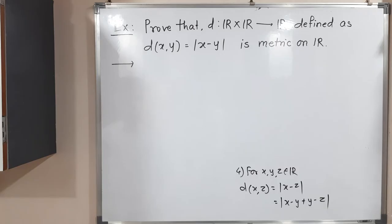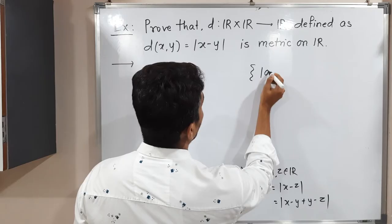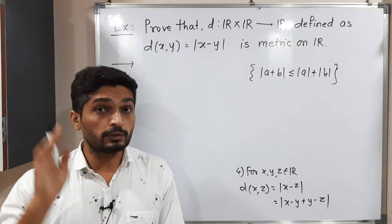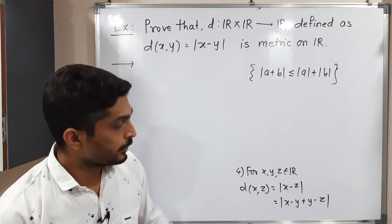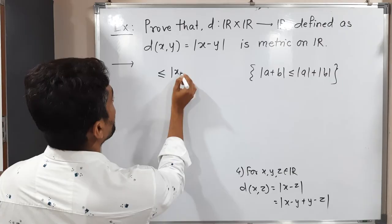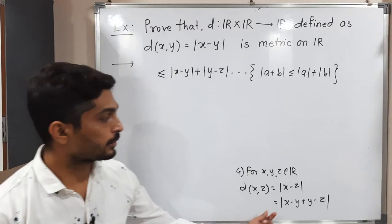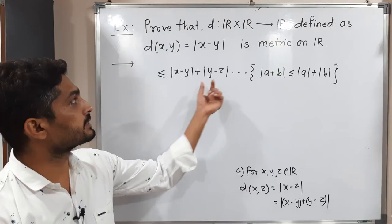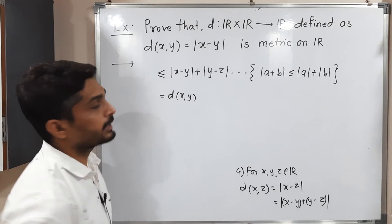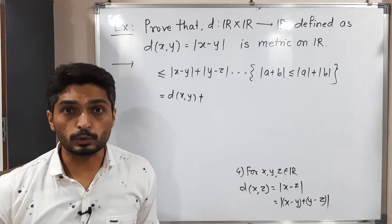We use the property |a + b| ≤ |a| + |b|, which is the triangle inequality for absolute values, already proved in first year real numbers. Considering a = x − y and b = y − z, we apply this property to get |x − y + y − z| ≤ |x − y| + |y − z|. Writing this using the definition of d, |x − y| = d(x, y) and |y − z| = d(y, z). So we have d(x, z) ≤ d(x, y) + d(y, z).